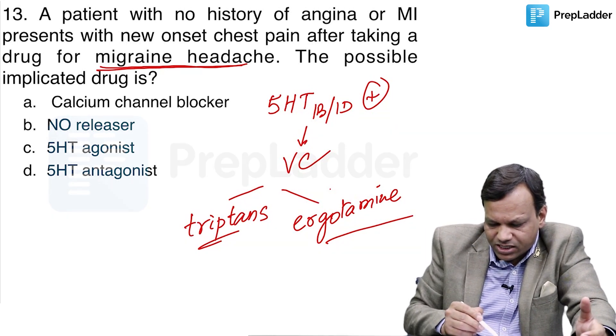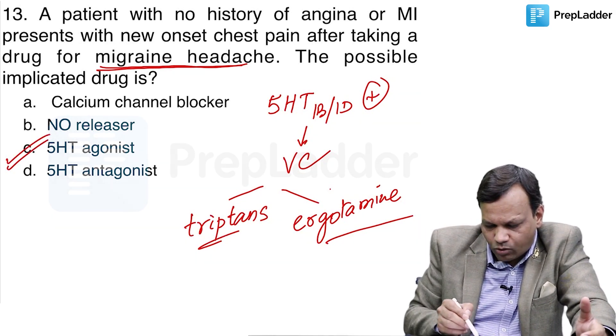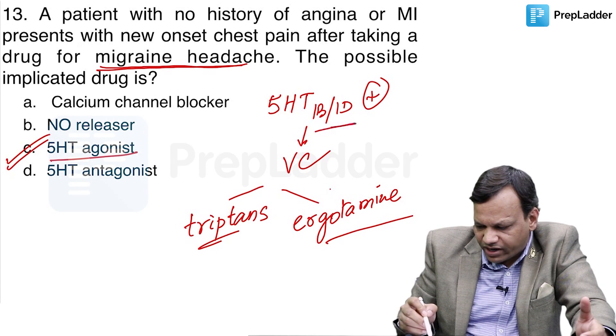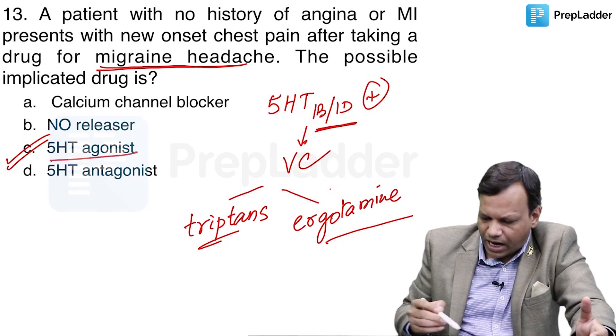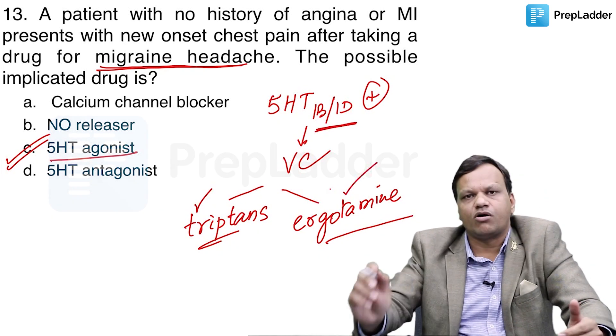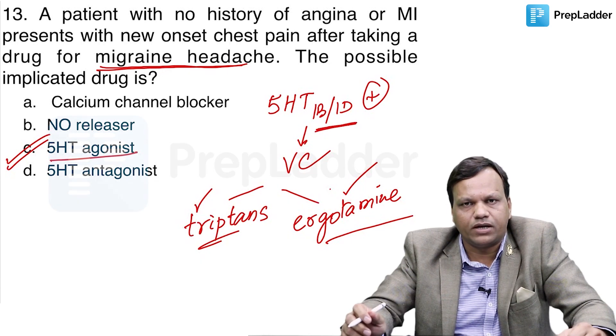The possibly implicated drug is a 5-HT agonist. More specifically, these are 5-HT-1B-1D agonists, and the drugs include triptans or ergotamine.